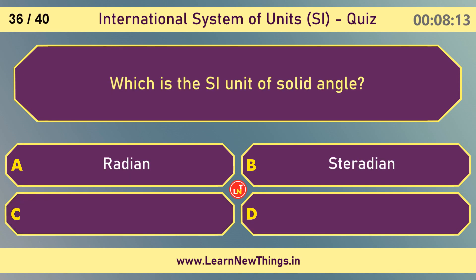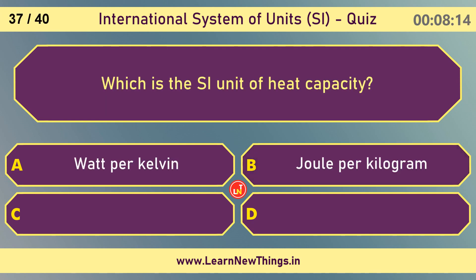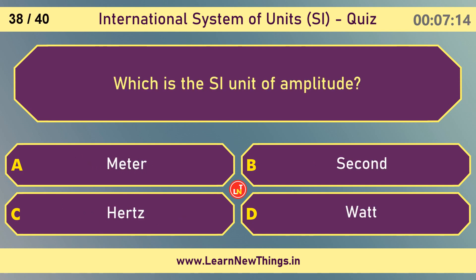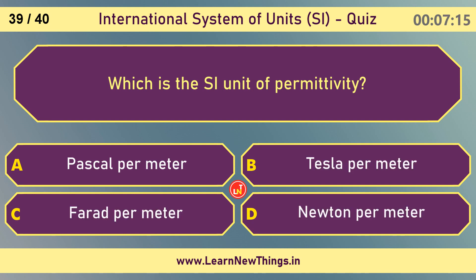Which is the SI unit of solid angle? Steradian. Joule per kelvin is the SI unit of which one of the below? Which is the SI unit of amplitude? Meter. Which is the SI unit of permittivity? Farad per meter.